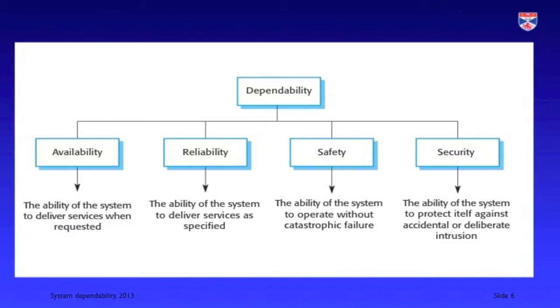As I said in my introductory video on critical systems, dependability is a composite property. It's an amalgam of four separate properties: the system availability, the system reliability, the system safety, and the system security. I'll be talking about all of these in separate videos.